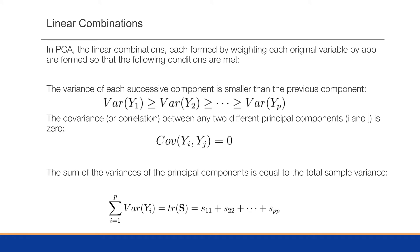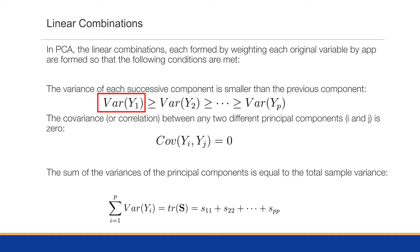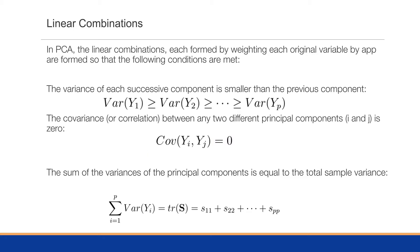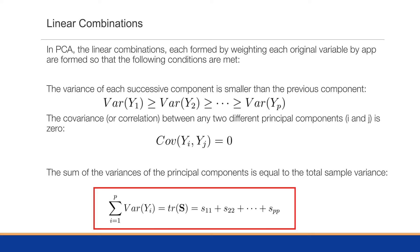In PCA, the linear combinations are formed by weighting each original variable so that specific conditions are met. The variance of each successive component is smaller than the previous, so Var(Y1) ≥ Var(Y2) ≥ … ≥ Var(Yp). The covariance or correlation between any two different principal components is zero — they are independent, orthogonal to each other, creating their own new set of dimensions. Additionally, the sum of the variances of all principal components equals the total sample variance.